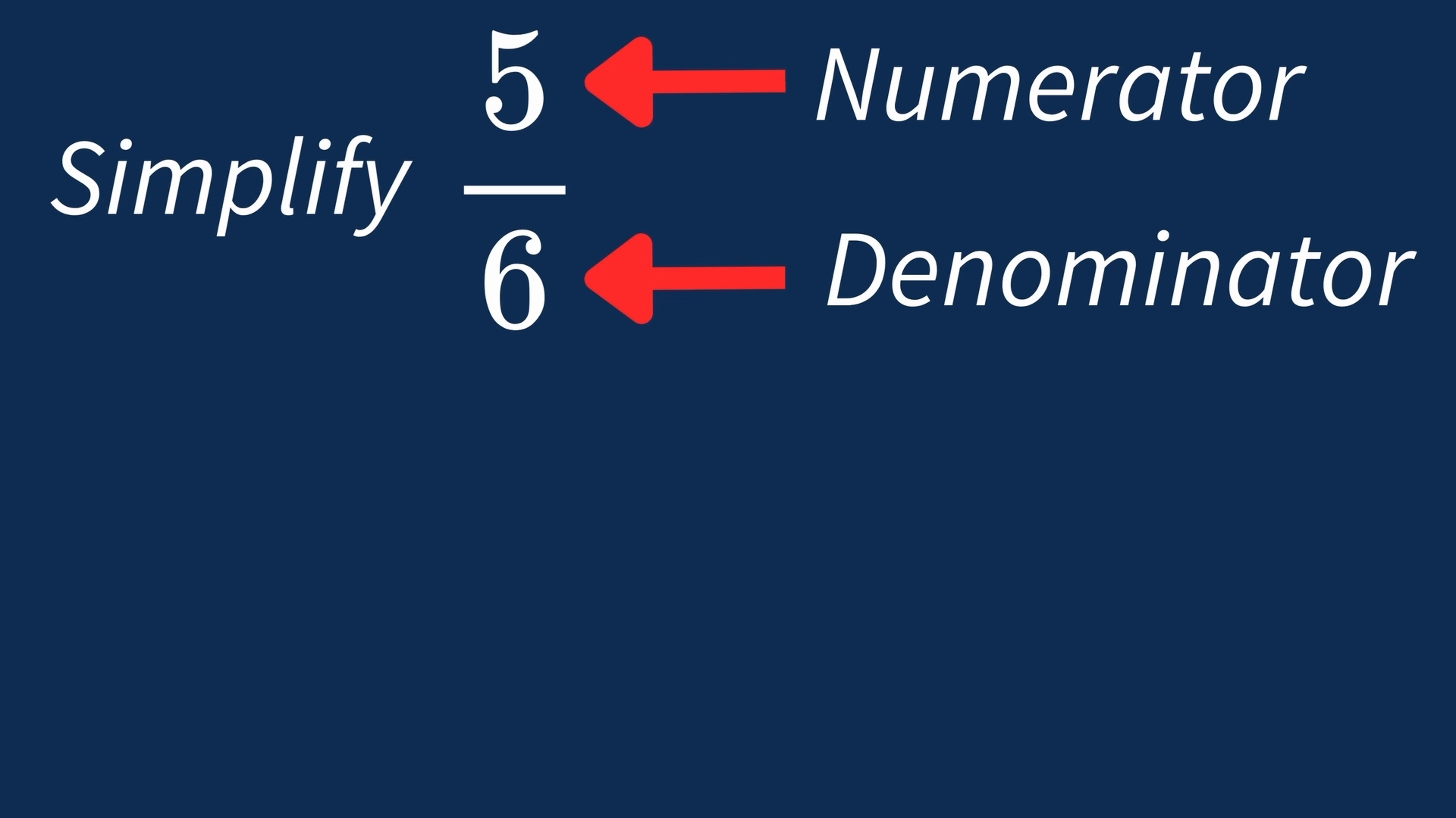A common factor is a number that divides evenly into both. Let's look at the factors for each number. For 5, the factors are 1 and 5. For 6, the factors are 1, 2, 3, and 6.